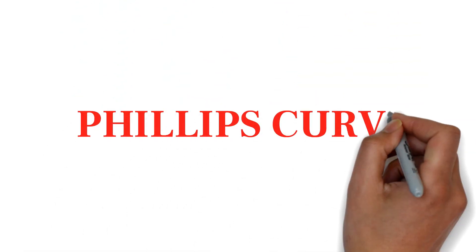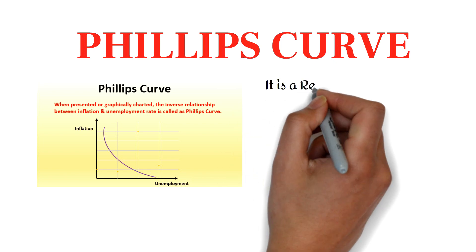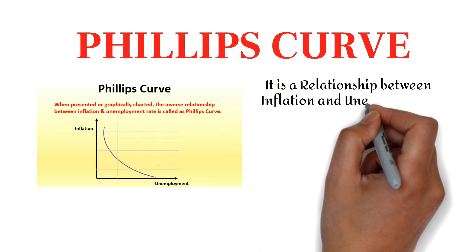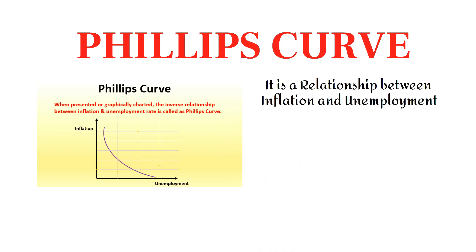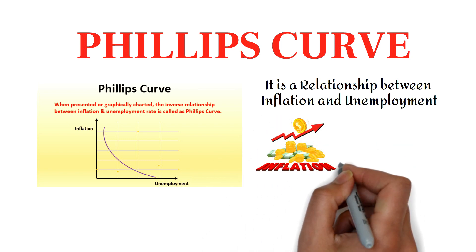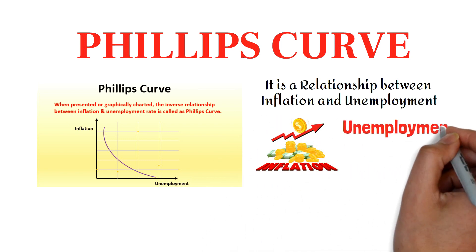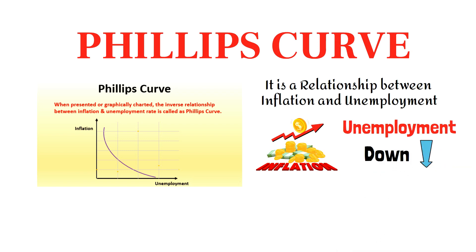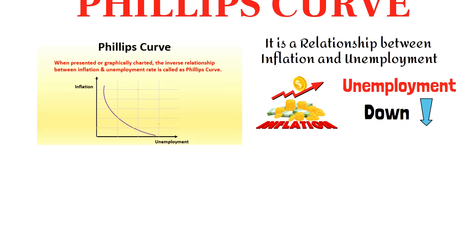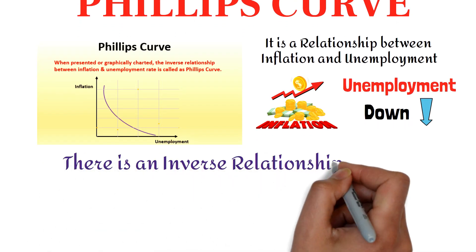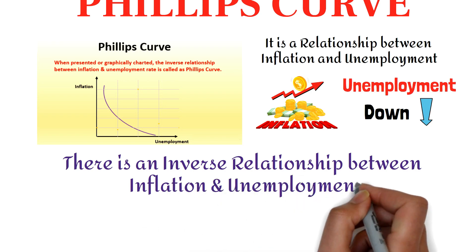Now what is Phillips curve? Phillips curve is the relationship between inflation and unemployment. So Phillips says that whenever inflation is high in the economy, unemployment should go down, as I explained you before. So according to Phillips, there is an inverse relationship between inflation and unemployment.